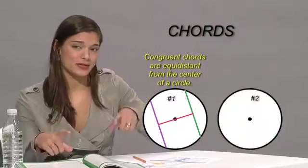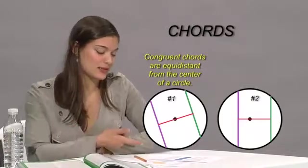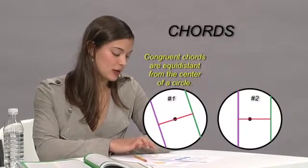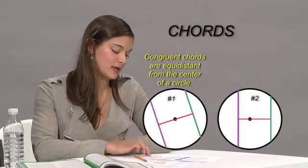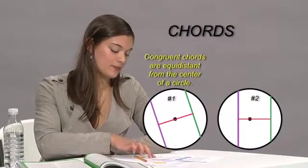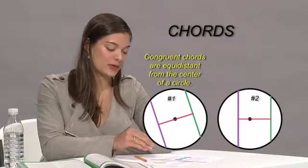But if they're different lengths, then they're going to be different lengths from the center. And you can see in the picture how the purple and the green chords look pretty much the same length. But you can see in the second picture how they're definitely not the same length. But in the second picture, you can see that one is farther apart from the other.